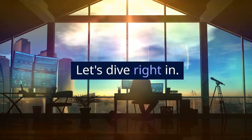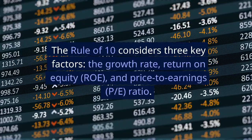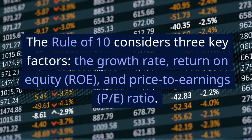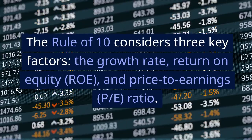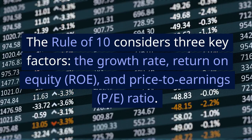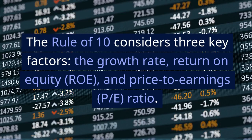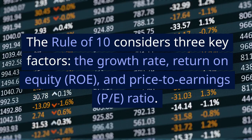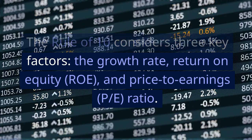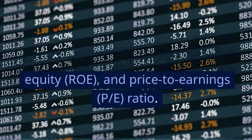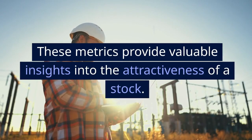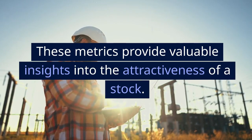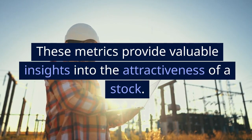Let's dive right in. The Rule of 10 considers three key factors: the growth rate, return on equity (ROE), and price-to-earnings (P/E) ratio. These metrics provide valuable insights into the attractiveness of a stock.